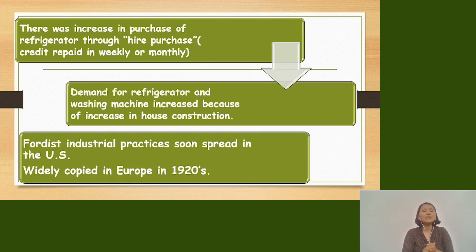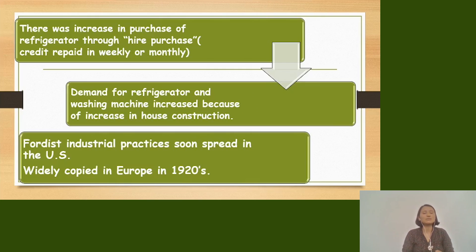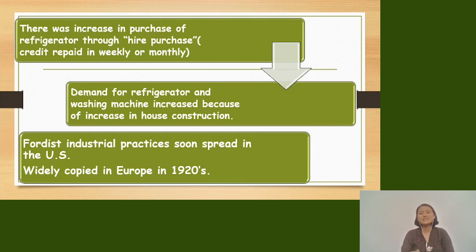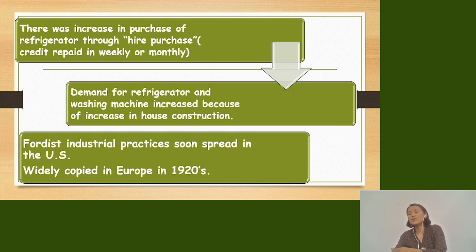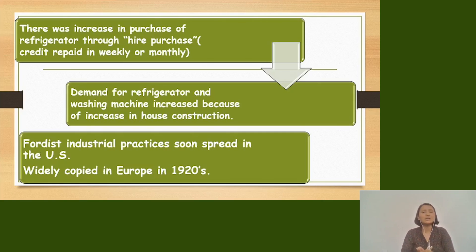During this time, a new method was introduced called hire purchase. Hire purchase is a system in which you can purchase goods in advance and then pay the money in installments — either weekly or monthly payments.